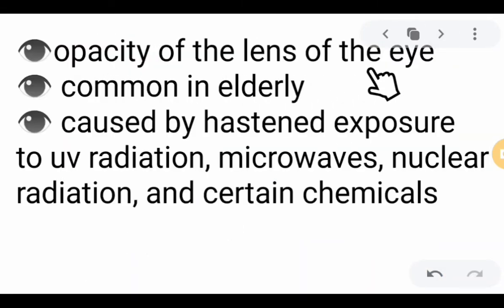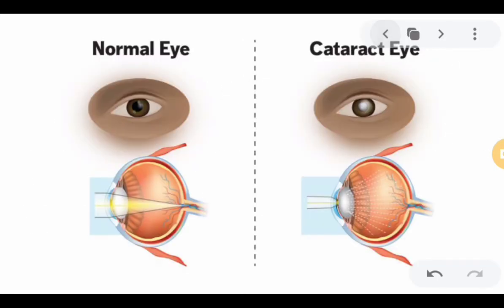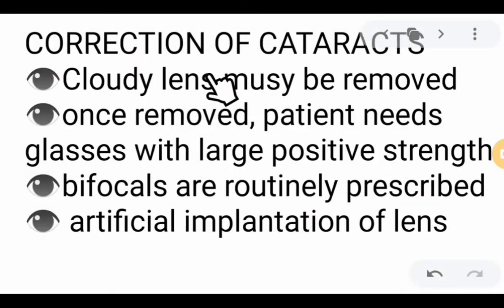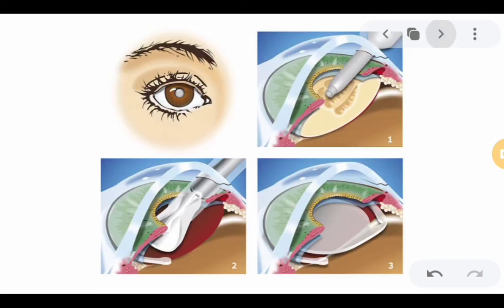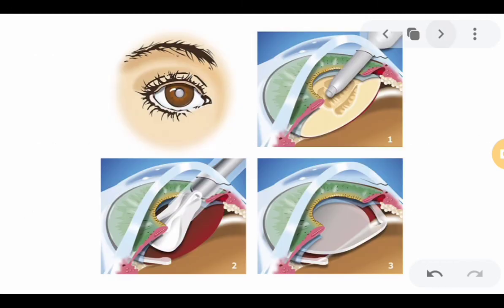Cataracts can be defined as the opacity of the lens of the eye, very common in elderly persons. In some instances, unsafe exposure to UV radiation, microwaves, nuclear radiation, and certain radioactive chemicals can also cause cataracts. A person with a cataract has a cloudy shade in the pupil, making them unable to see properly, and this can sometimes lead to blindness. To correct cataracts, the cloudy lens must be removed surgically. Once removed, the patient needs glasses with large positive strength, or if only one eye is affected, bifocals. Another correction is the artificial implantation of a lens after removal of the cloudy part.